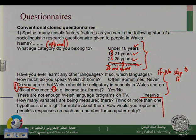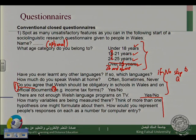Now let's go to the writer's questions. How many variables are being measured? Think of more than one hypothesis one might formulate. How would you represent people's responses on each as a number for computer entry? Let's say that you have finished your data collection. Now try to guess the researcher's objective behind this research by identifying the variables. I see here that the researcher wants to check students' or participants' attitudes and beliefs about the Welsh language and the use of Welsh language in everyday life.